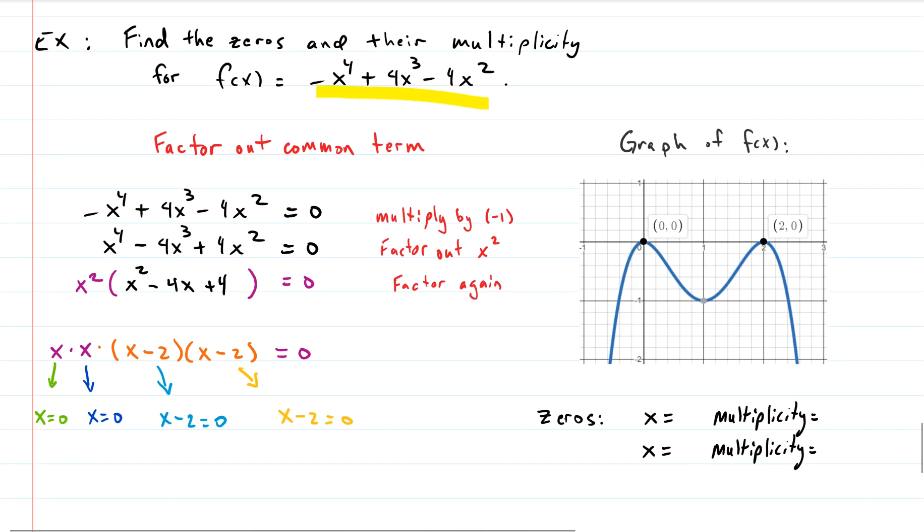Let's do another quick example. Here's an equation here, negative x to the fourth plus 4x cubed minus 4x squared. So we have three terms, so we can't really factor by grouping. But I see that all of them have pretty high powers. They all at least have x squared. So I think that we should start by factoring out the common term. But before we do that, I don't like this negative out front personally. So I just multiply everything by negative 1. So we have this set equal to 0. And we multiply it by negative 1. And that changes all the signs.